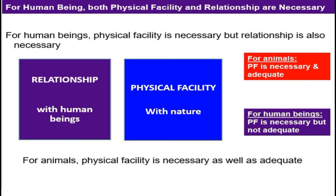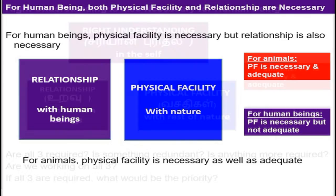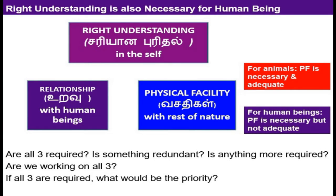If we consider human beings, we need relationship and we need physical facility. But for animals, physical facility alone is sufficient — moreover, adequate. Apart from physical facility and relationship, we need right understanding. That is very, very important. As human beings, we should have right understanding in using physical facilities as well as in having proper relationships with other human beings. So for human beings, physical facility alone is not sufficient — we need relationship also.